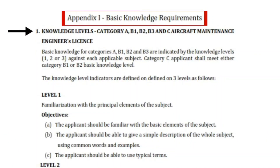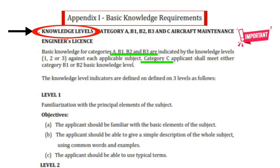In this part we will see the different knowledge requirements for category A, B1, B2, B3, and C. Remember one important point: CAT C license is obtained after gaining certain experience as a B1 or B2 license holder, which we studied earlier in subpart A. So the knowledge level requirement for CAT C is either B1 or B2.